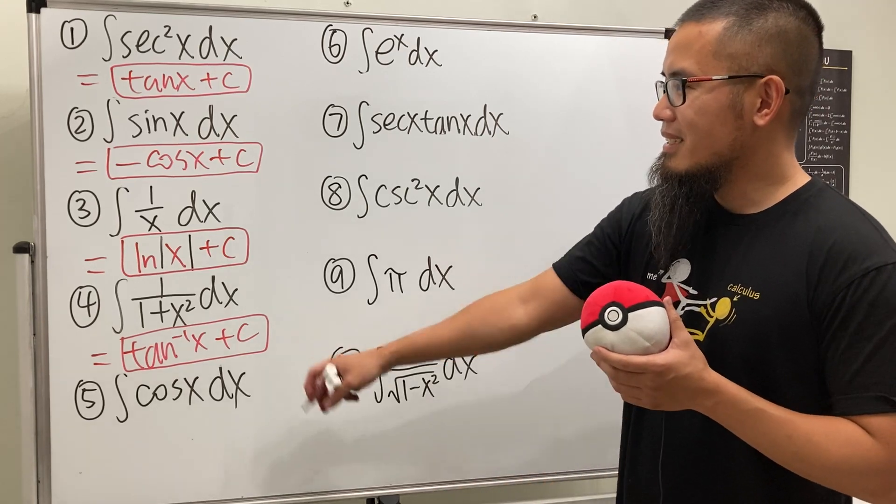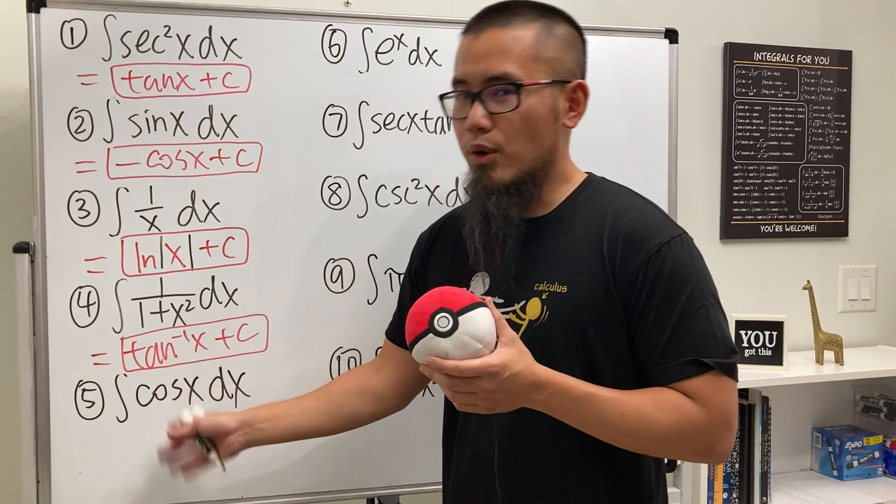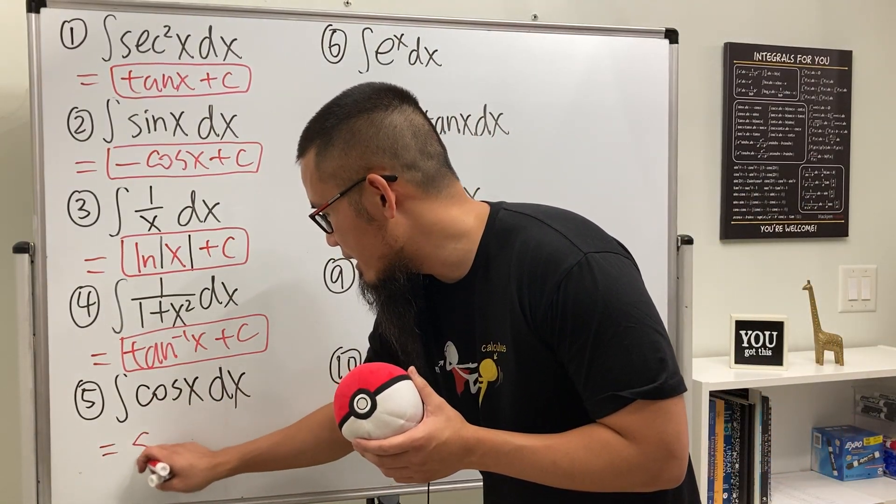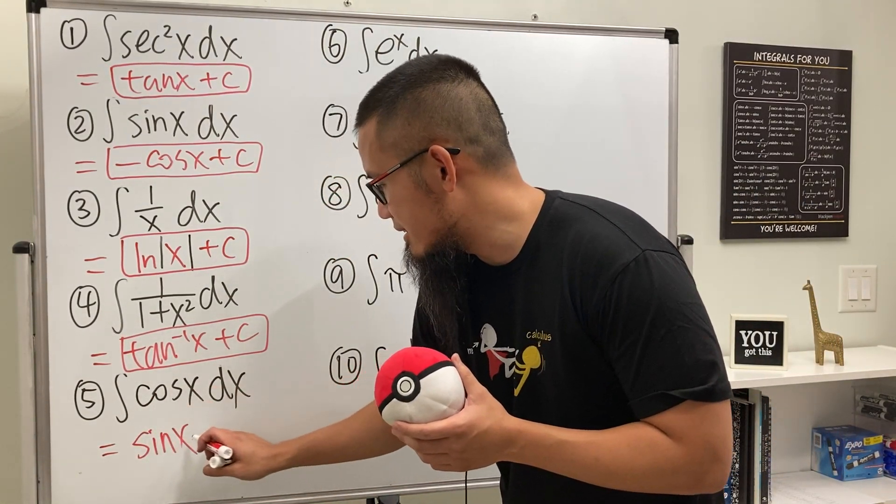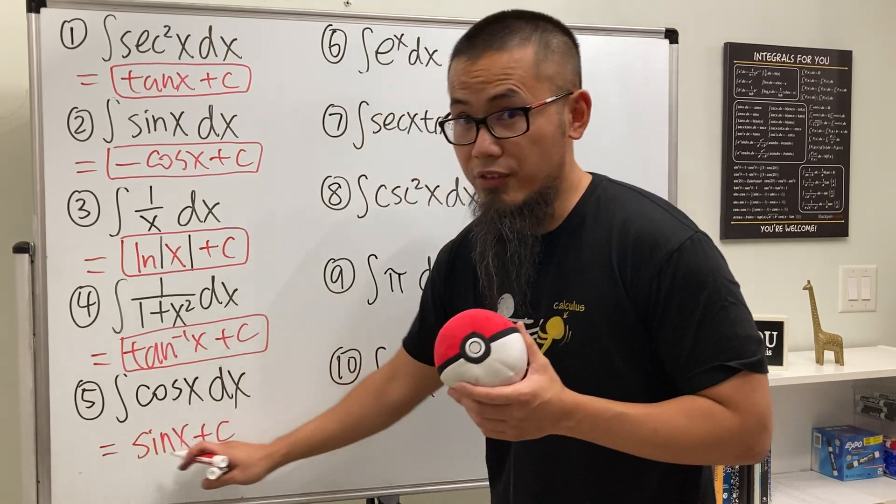All right, continue. Integral of cosine x. Well, it will just get positive sine x, because if we differentiate this we do get positive cosine x. So that will be it.